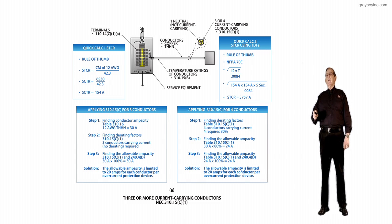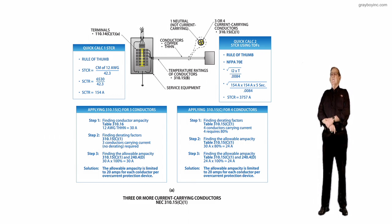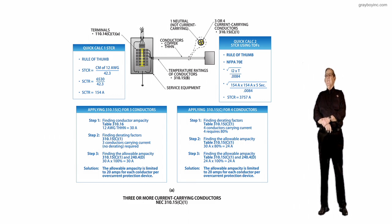And then you would take 154 times 54, current squared, times the 5 seconds for your clearing time at 154 amps. That's where this comes from, 154 amps, 5-second clearing time. With this new clearing time now, 0.0084 into that, you'd have 3,757 amps.